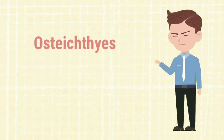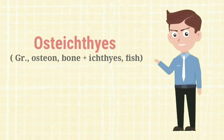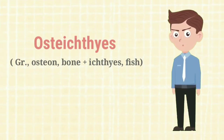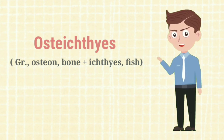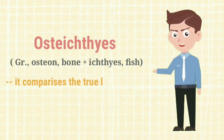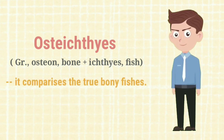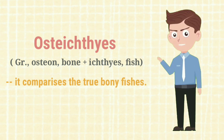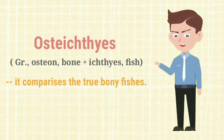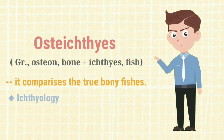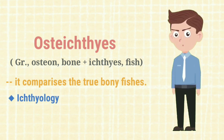Class Osteichthyes comes from the Greek words 'Osteon' meaning bone, and 'Ichthys' meaning fish. It comprises the true bony fishes. The study of bony fishes is known as ichthyology.